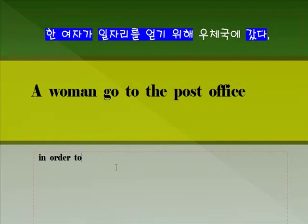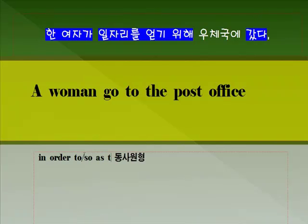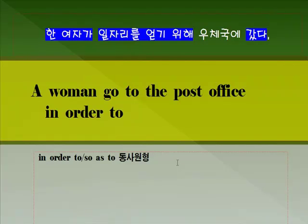'~하기 위해서'는 'in order to' 다음에 동사원형을 쓰면 됩니다. 물론 'in order to' 대신에 'so as to'라고 하는 표현도 있습니다. 일자리를 얻다 — 일자리는 'job'이죠, 얻는 것은 'get'을 쓰면 됩니다.